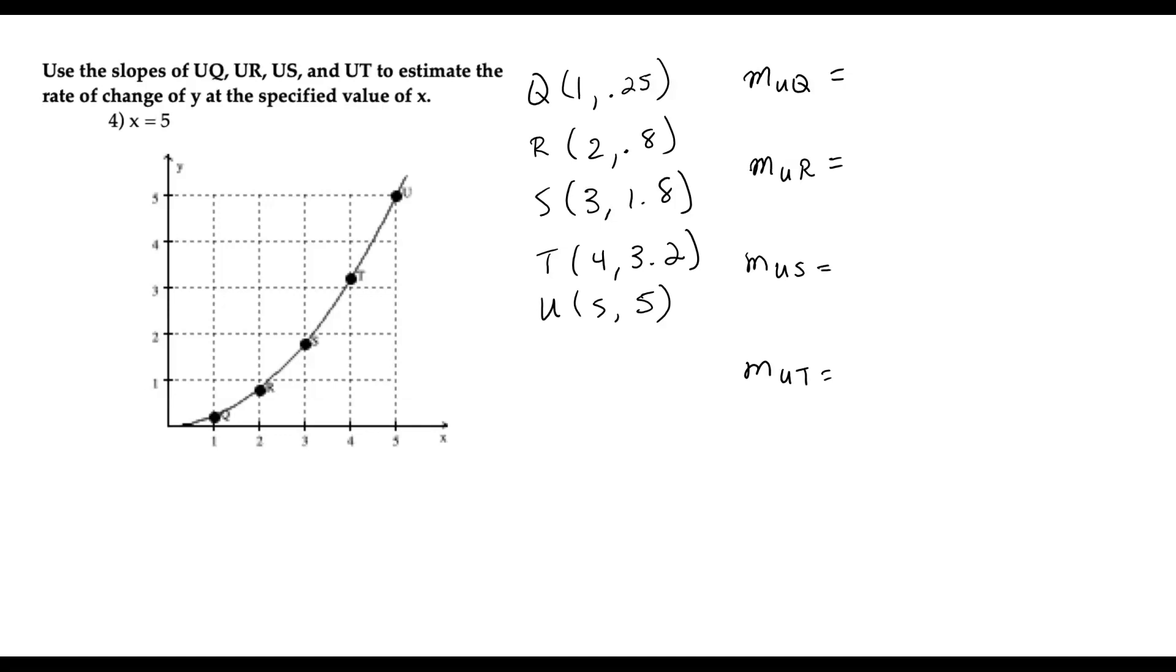They want us to use the slopes of UQ, UR, US, and UT here to estimate the rate of change of y at a specific value of x. So they want us basically to find the slope of the tangent here at 5, and they want us to estimate that by finding closer and closer values of the slope there.